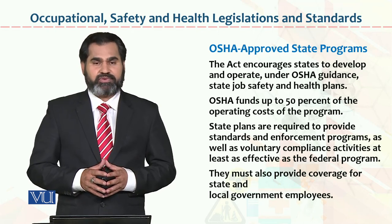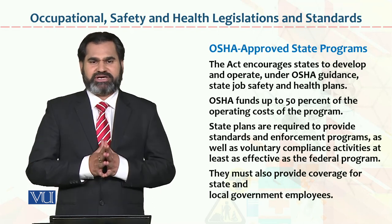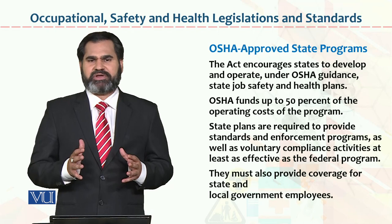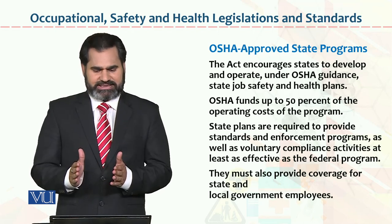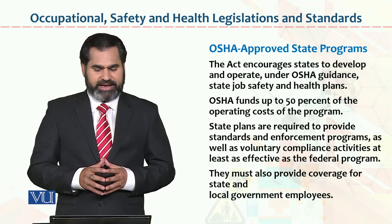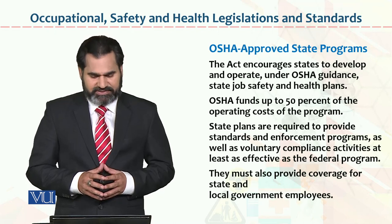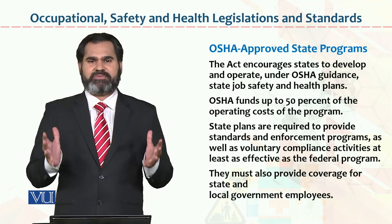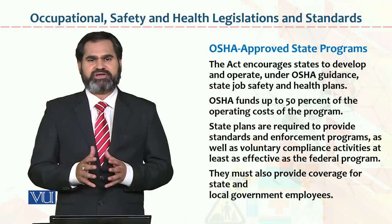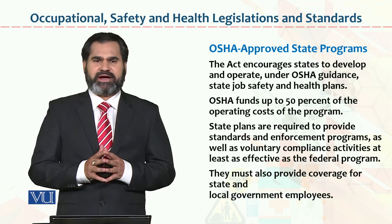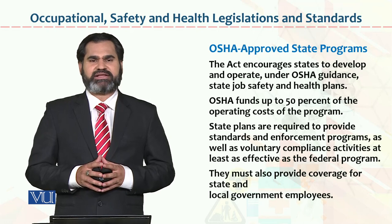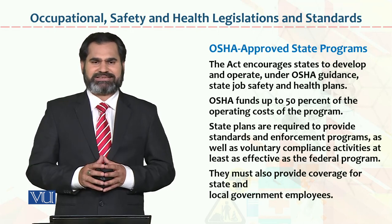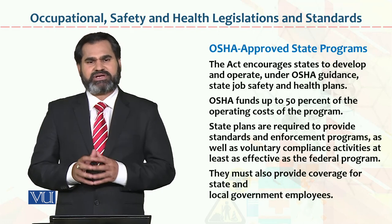Occupational Safety Health Association Approved State Programs — there are some programs that are approved by the state. For example, Michigan State, New York State, or Massachusetts State have some programs approved under OSHA. These programs are implemented at the state level and all people within the state's geographical boundary must abide by those rules and regulations. OSHA funds up to 50% of the operating cost of the program — 50% is the maximum limit they can fund; the remaining funding must come from the employer or the organization.